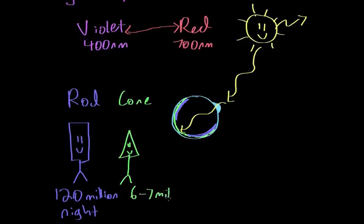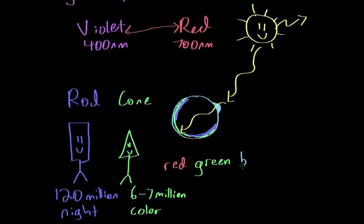Cones are fewer in number — about six to seven million per retina — but they're really important because they're responsible for color vision. There are three different types of cones: red cones, green cones, and blue cones. Red cones are sensitive to red light, green cones to green light, and blue cones to blue light. These three types absorb light corresponding to red, green, and blue.